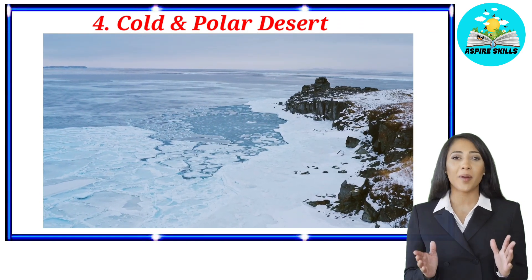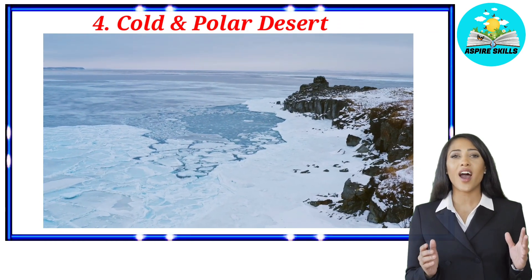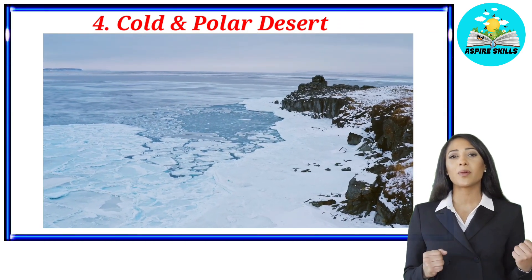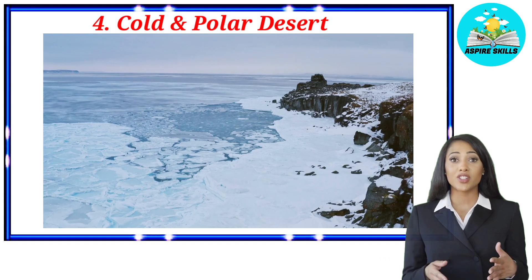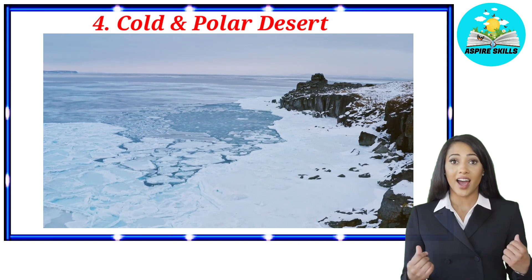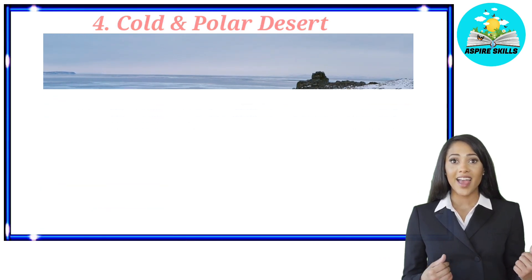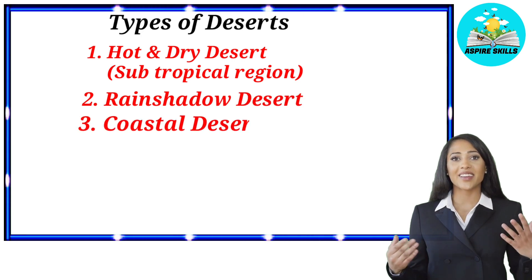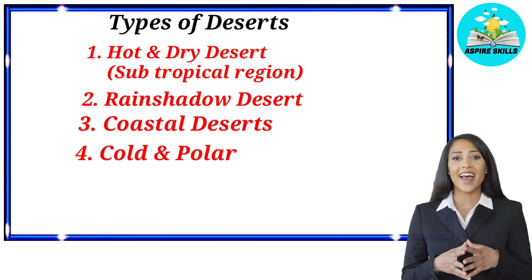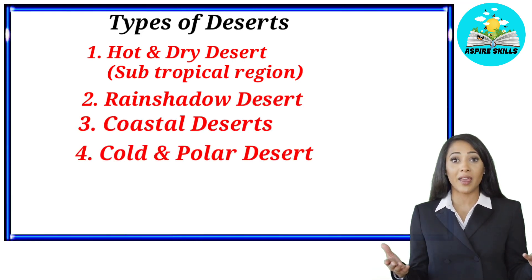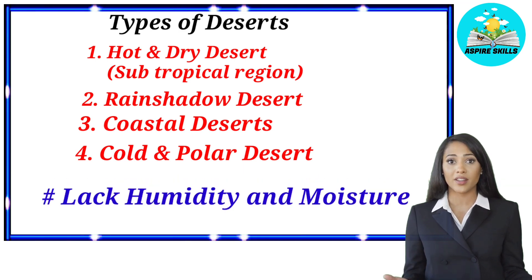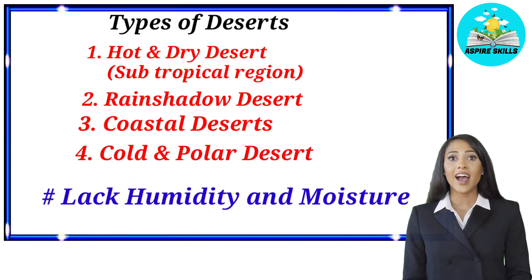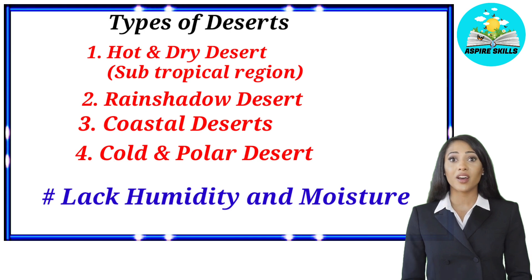Because of low temperature, pressure, moisture, distance from the sea, and poor vegetation, precipitation is very low in cold desert regions. The important thing to remember is that these different types of desert have one thing in common — they lack humidity and moisture. When there is less humidity or moisture, there is a shortage of rain.